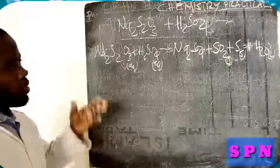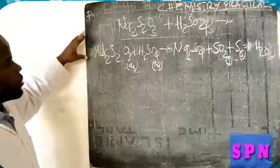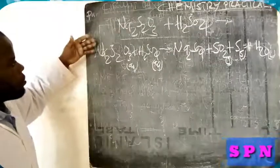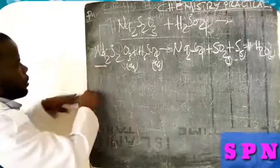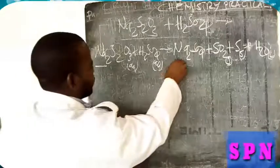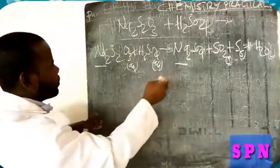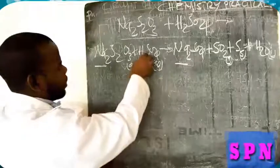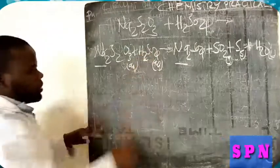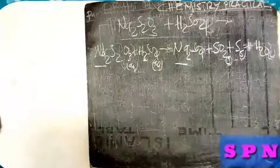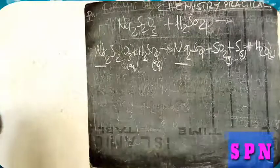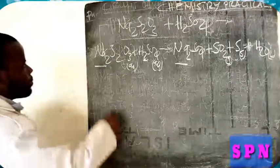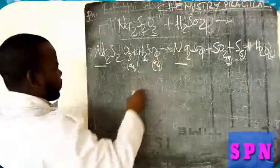So the ionic equation, when we split, spectator ions will be this one and this one. When balanced, these are balanced. So you are going to cancel this one and then this one.